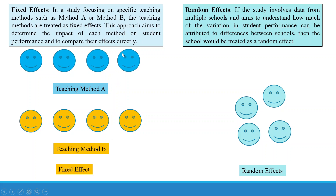In a study focusing on specific teaching methods such as method A or method B, the teaching methods are treated as fixed effects. This approach aims to determine the impact of each method on student performance and to compare their effects directly. If the study involves data from multiple schools and aims to understand how much of the variation in student performance can be attributed to differences between schools, then the school will be treated as a random effect.